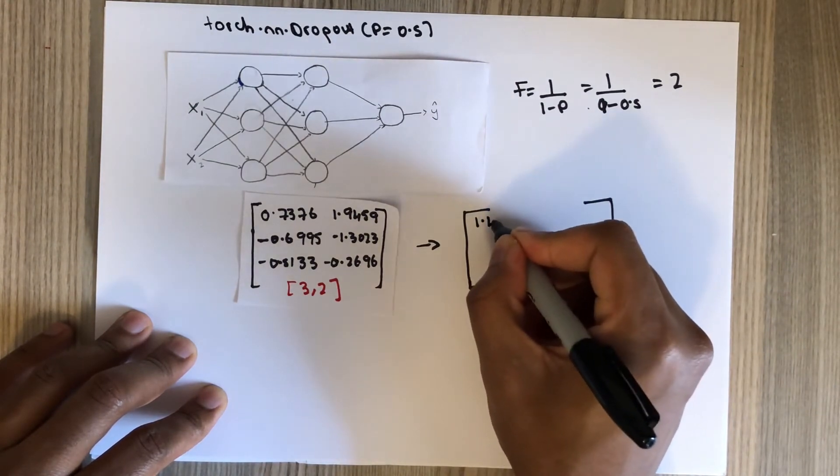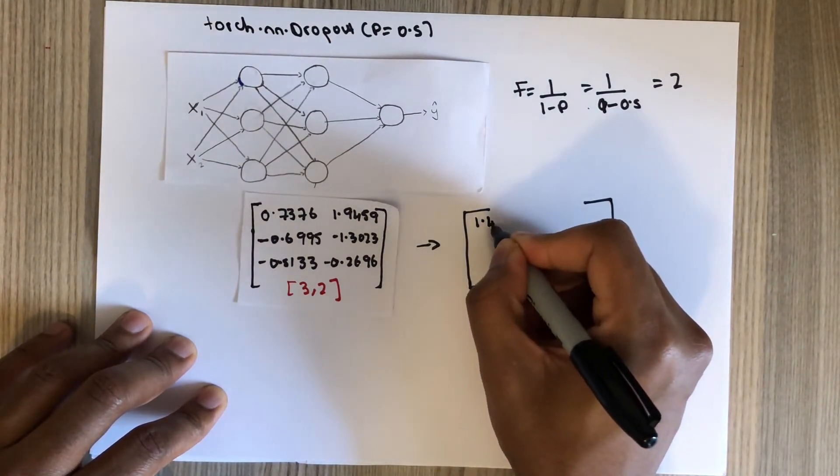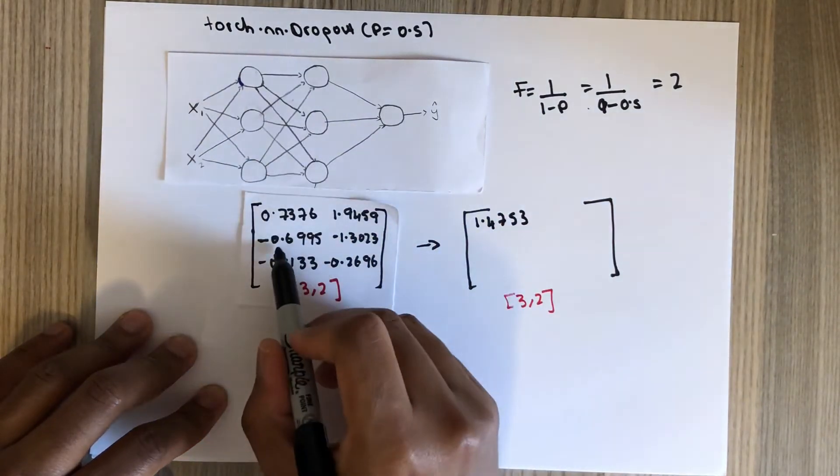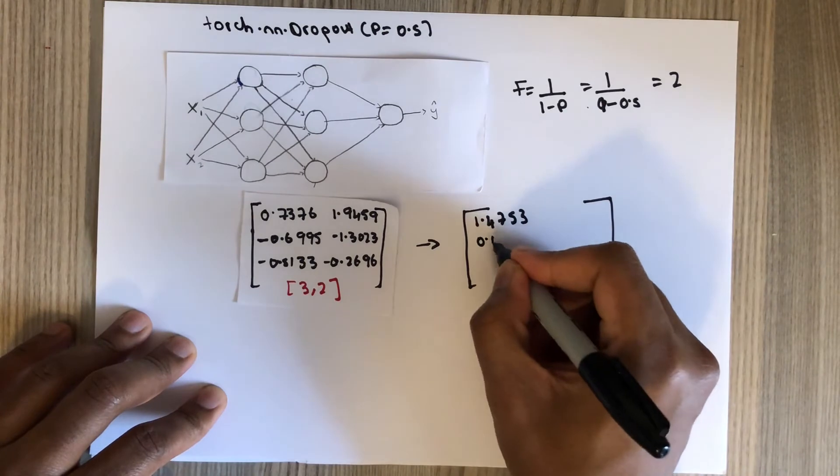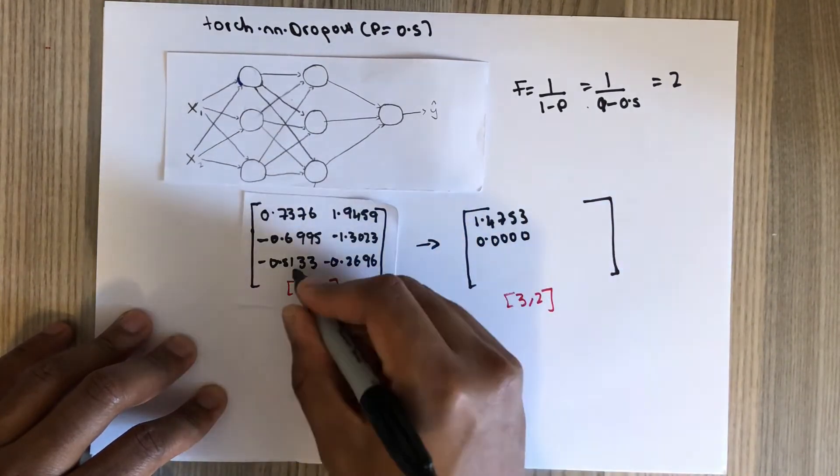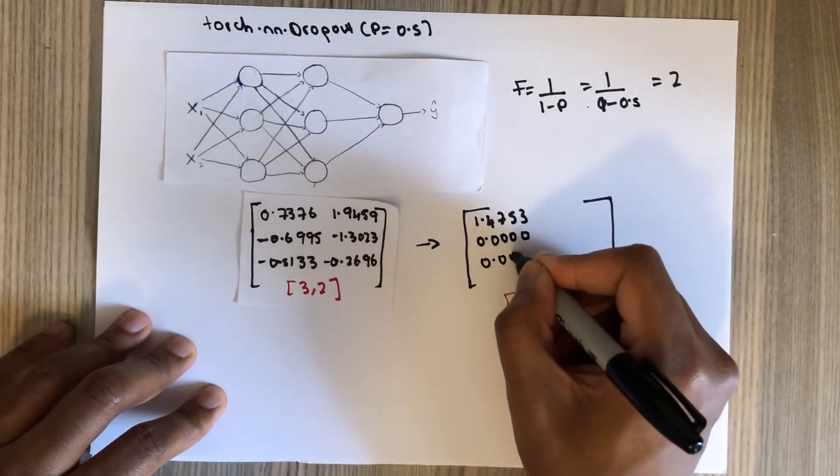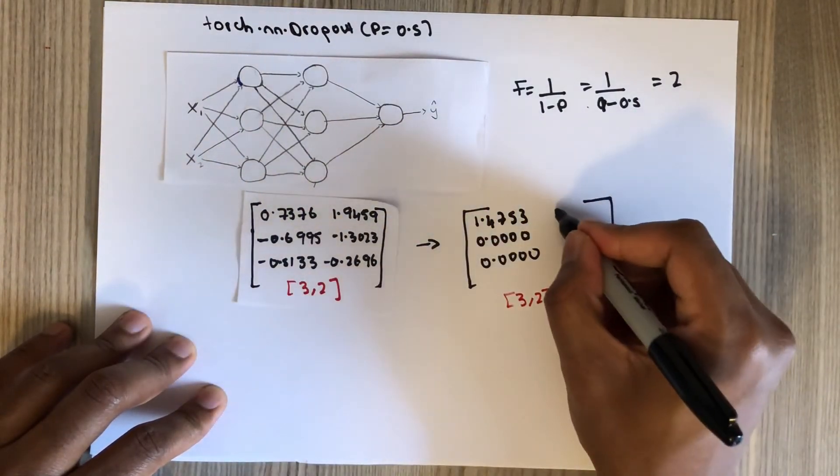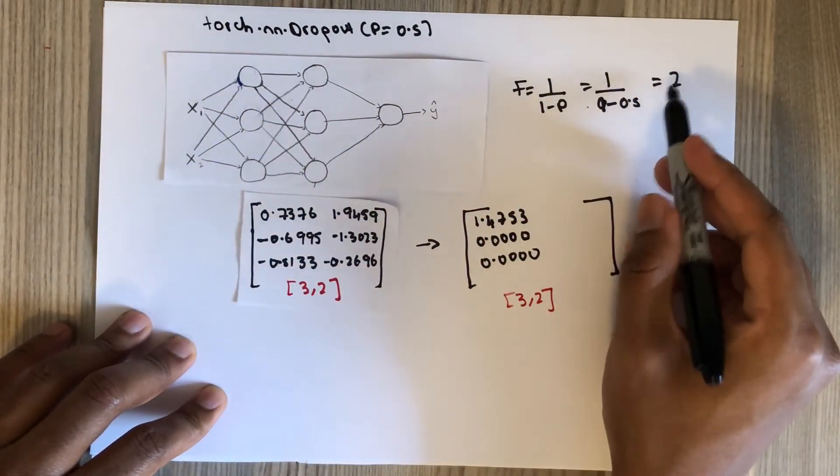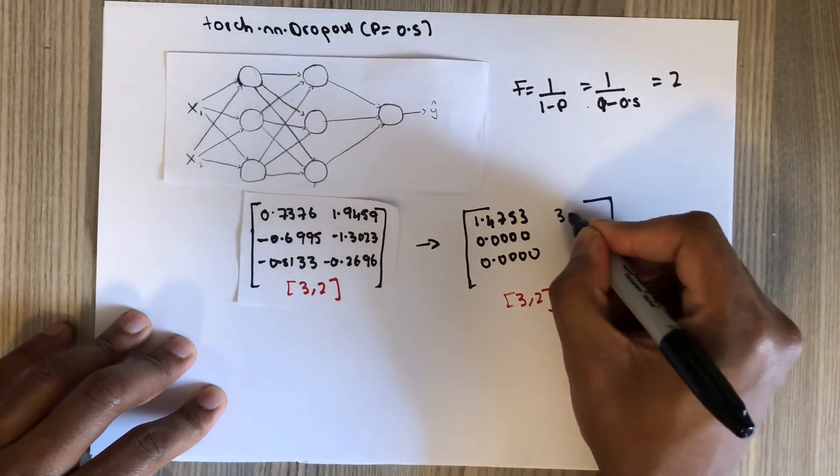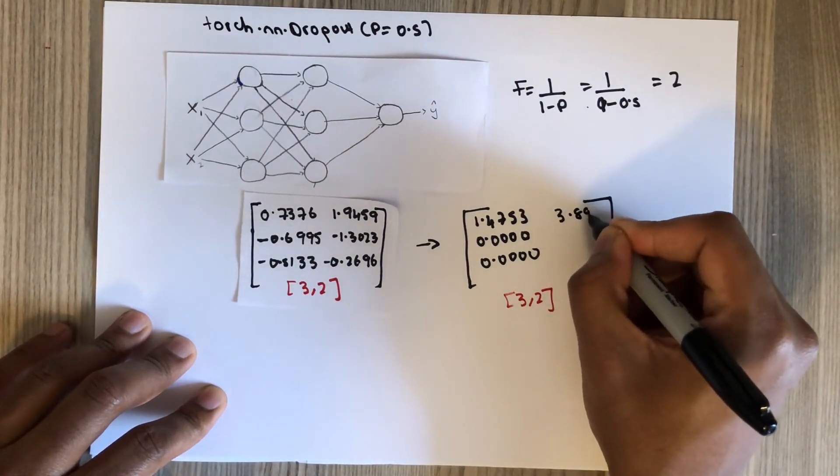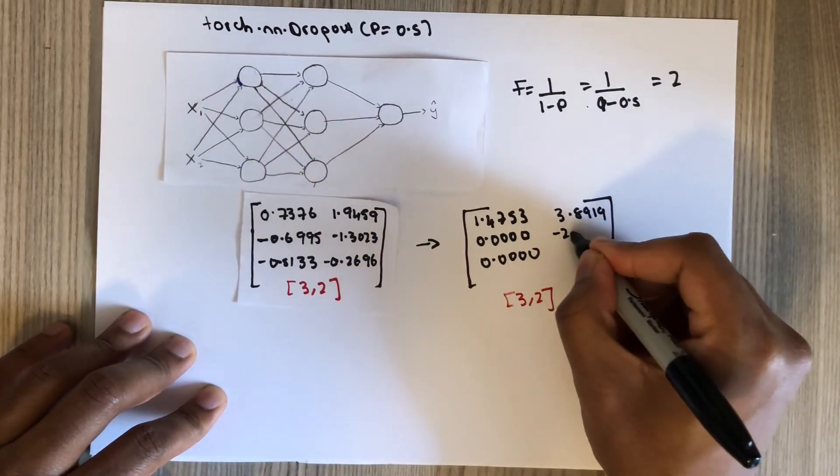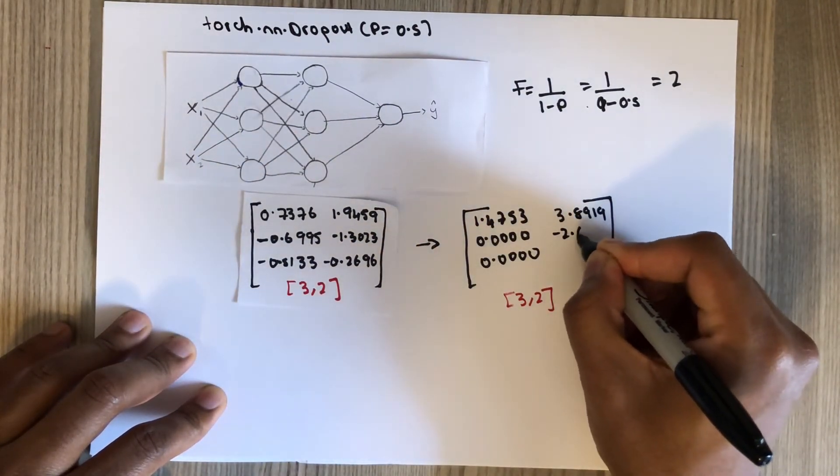Let's see this has been selected to be zero, zero. This one also zero. This one has been selected to be non-zero, so it's going to be multiplied by this scale factor. It's going to become 3.8919. This one also minus 2.6046.